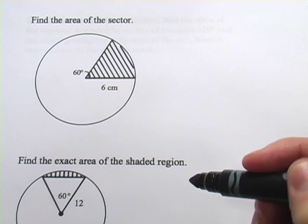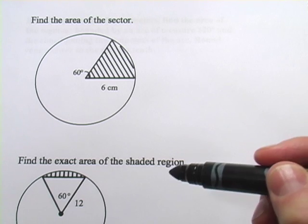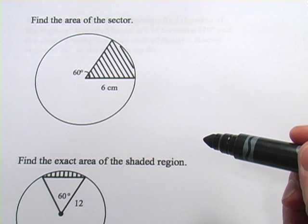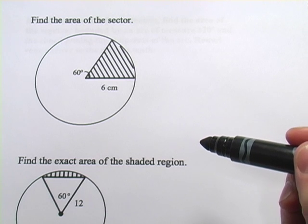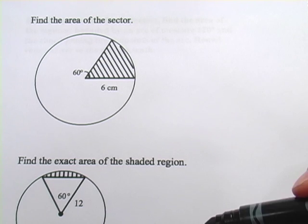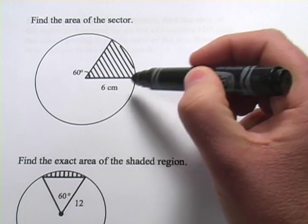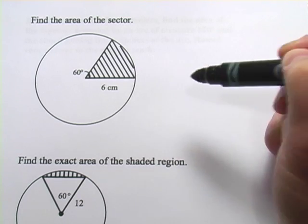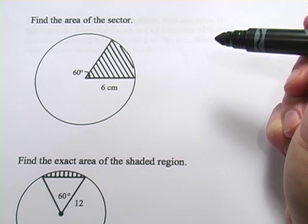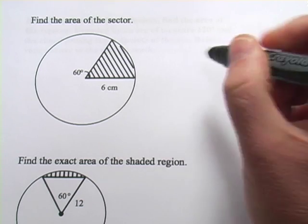Here we have some problems that ask us to find the areas of sectors and segments in circles. So first of all, what's a sector and what's a segment? Well, a sector is like this thing right here, this shaded area. It's kind of a piece of pie cut out of a circle.